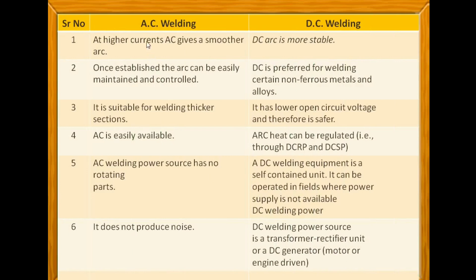For AC current, at higher current AC gives a smoother arc as compared to DC current. But in case of DC current welding, the arc will be more stable, and that stable arc also increases the melting speed of the welding. Basically, according to requirements, you would select either AC or DC power source.